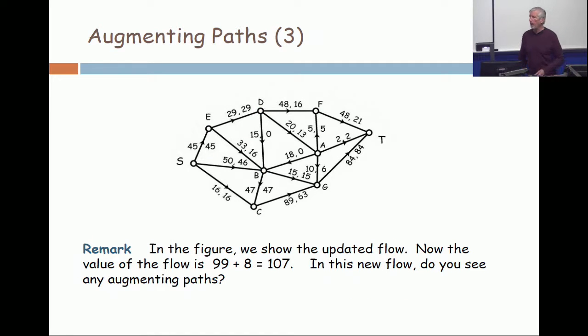Here is the same network with the changes made. Just at the end, we were looking at this and saying, do you see any augmenting paths in this updated flow? You do? S to B to D to F? S to B to? No, you can't go from B to D because you're going backwards and the edge is empty.